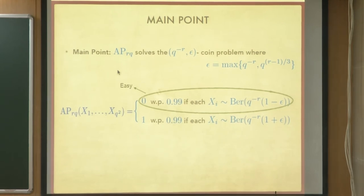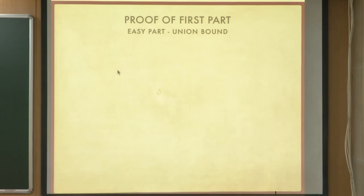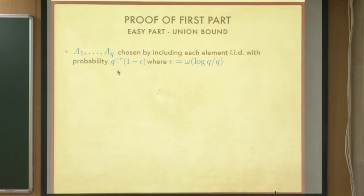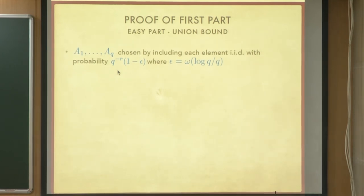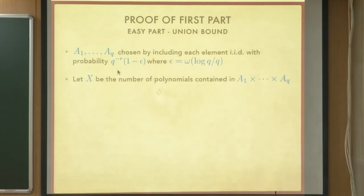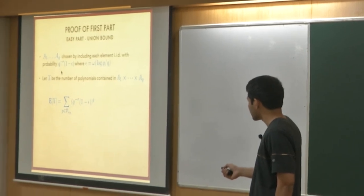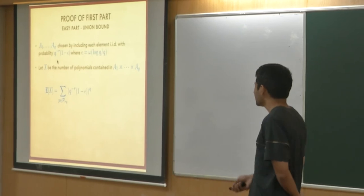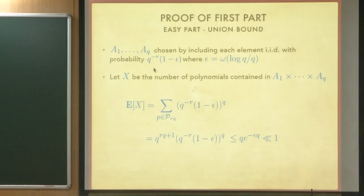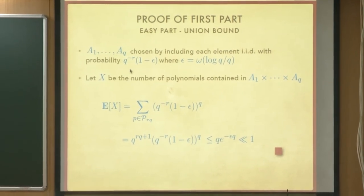The 0-statement is: if you plug in independent Bernoullis of too-small bias you get 0 mostly. I will start with the proof sketch of this part — it is the easy part. What we want to show is that you pick A_1 to A_q, each containing every element independently with probability q to the minus r times 1 minus epsilon. Let X be the number of polynomials you catch in this set. The expected number of polynomials is a sum over all polynomials of the probability of containing each point in the polynomial's graph, and there are q points in the graph. This is at most 1, and that is QED for the first part.